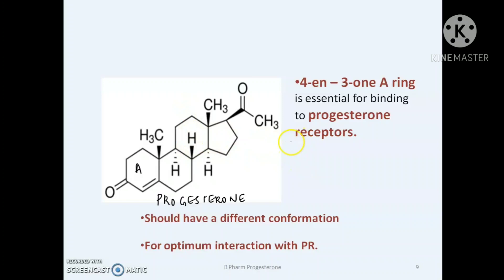You are familiar with the structure of testosterone as well as glucocorticoids and aldosterone. They all have the same A-ring as that of progesterone. But progesterone should have a different conformation from that of testosterone or glucocorticoids for the optimum interaction with progesterone receptors.